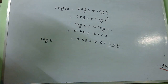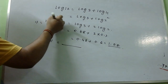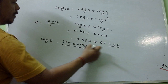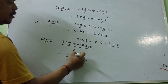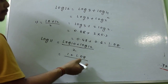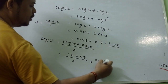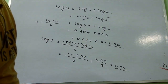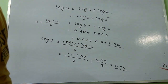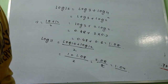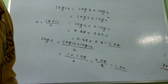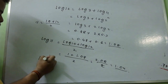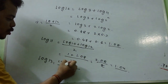For odd numbers like log 11, we write 11 as the average of 10 and 12: (10 plus 12) divided by 2. So log 11 equals (log 10 plus log 12) divided by 2, which is (1 plus 1.08) divided by 2 equals 2.08 divided by 2 equals 1.04.